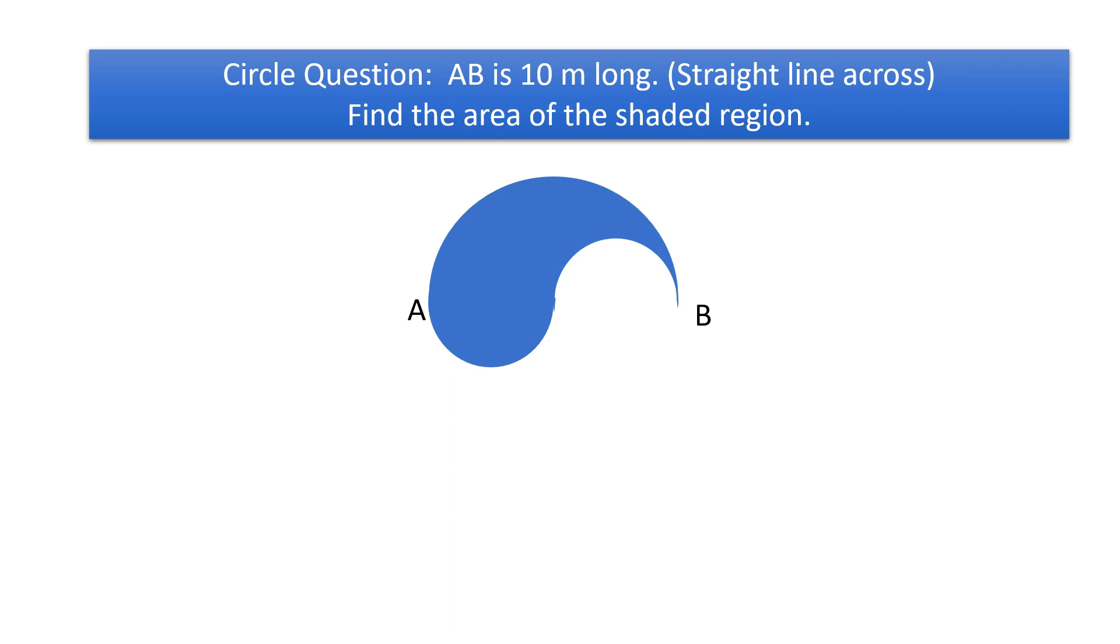Hey everyone, today we're going to go over the circle question. AB is 10 meters long, and if you were to draw a straight line across, this would be 10 meters. Find the area of the shaded region.